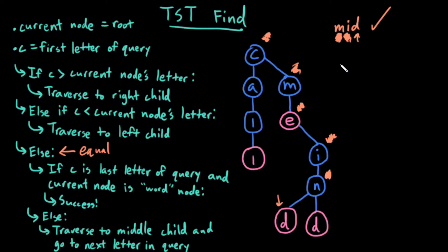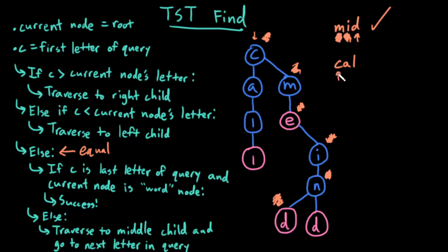Let's try another example. Let's try the word 'cow' — so not 'call', just 'cow'. I start at the root, I start at the first letter of my query. If c is greater than c, nope. If c is less than c, nope. Else, c is equal to c. If my current letter is the last letter of my query, no. Else traverse down the middle child and go to the next letter in my query.